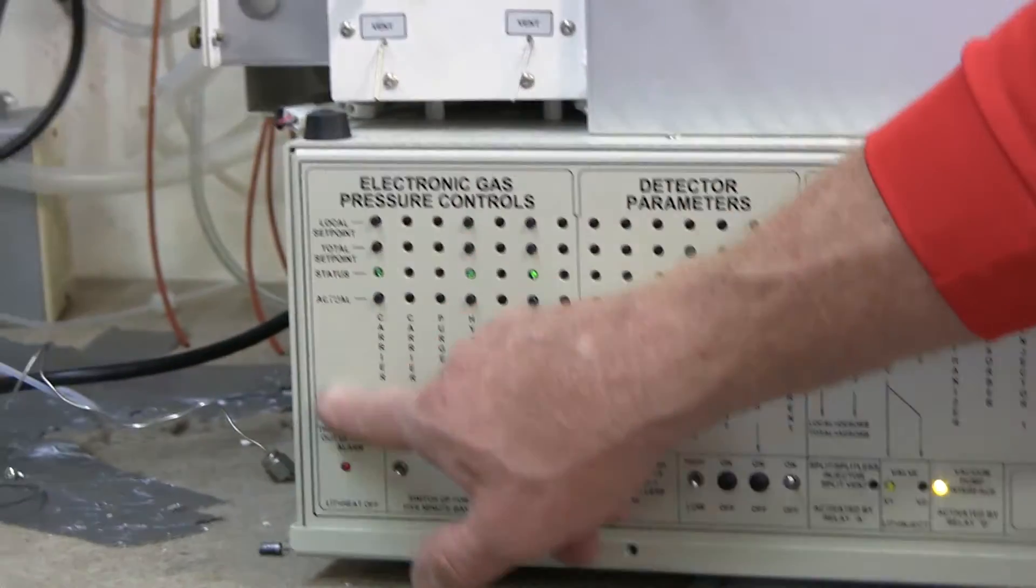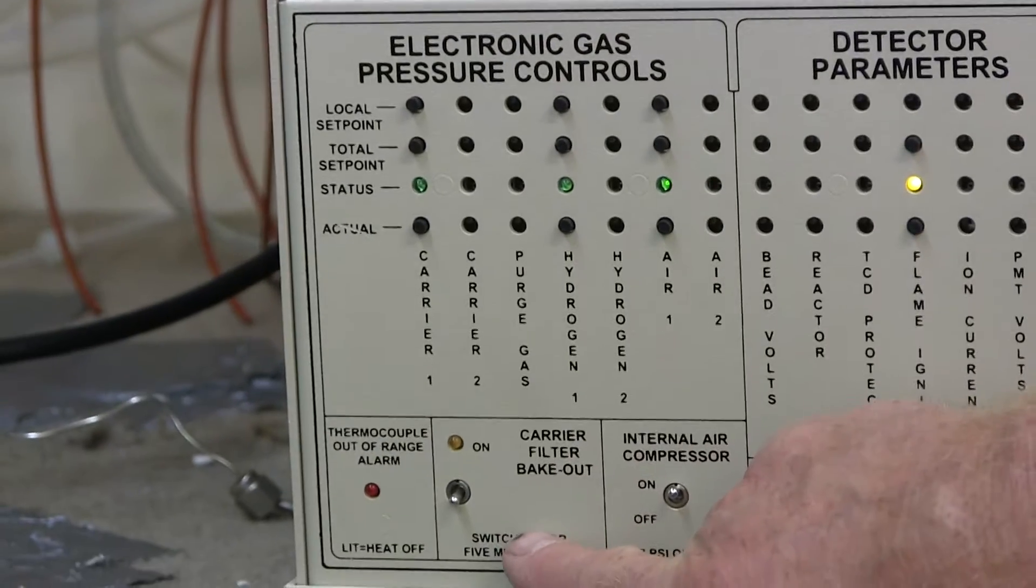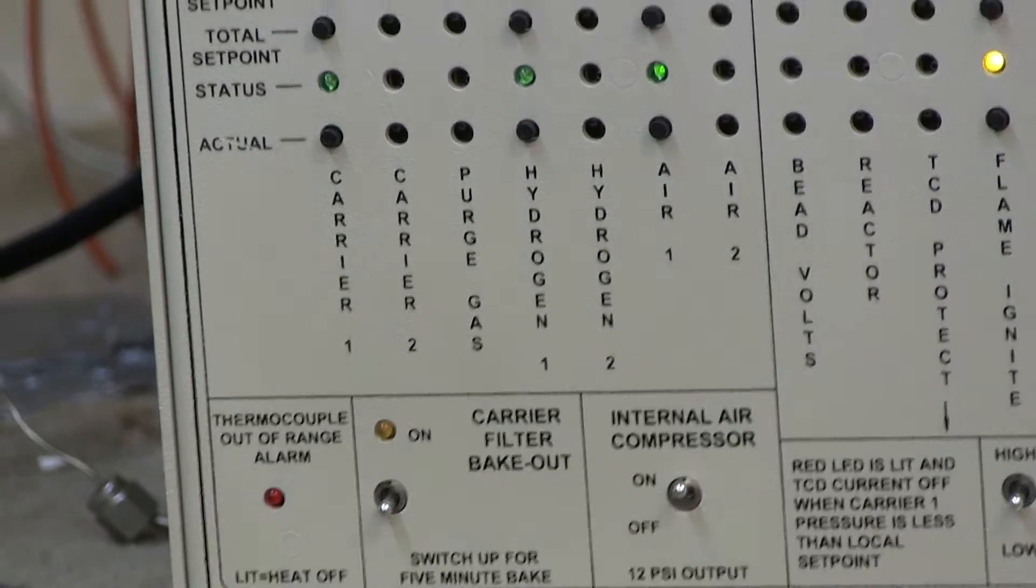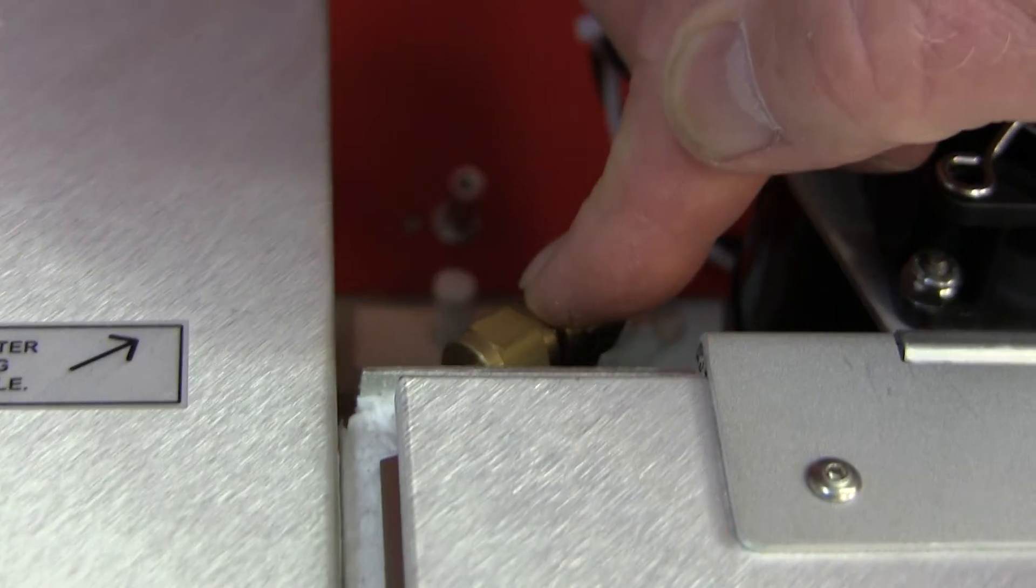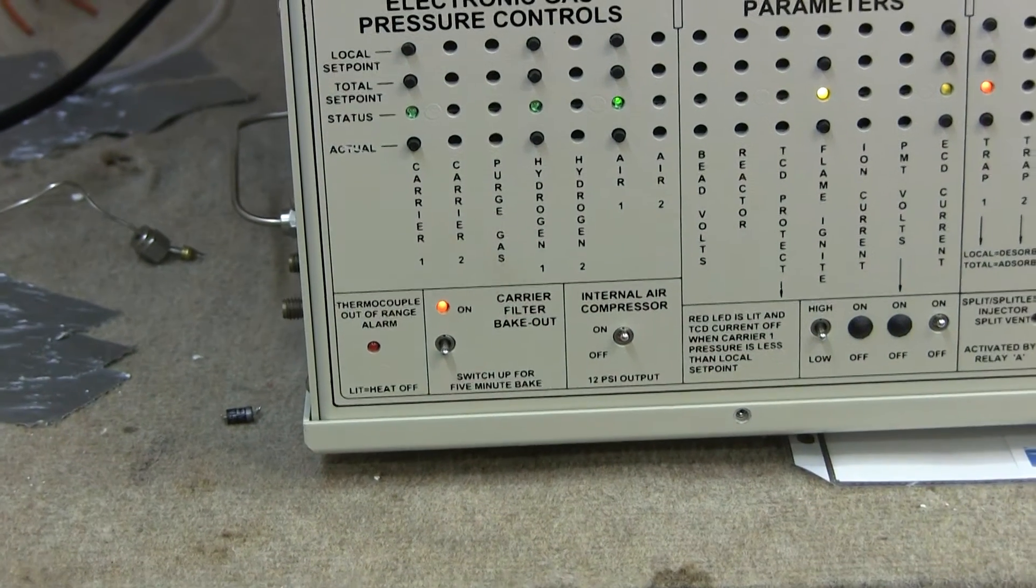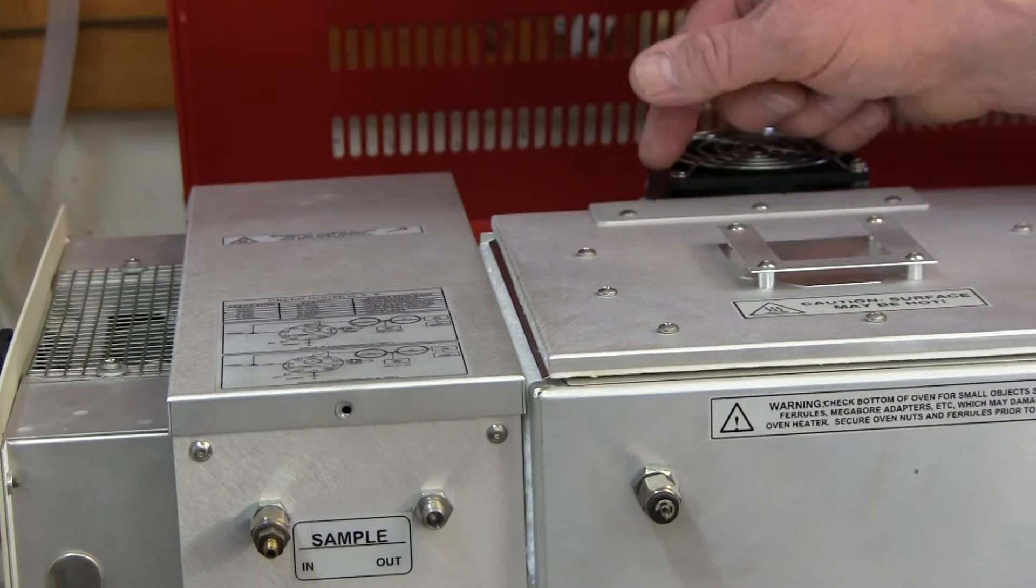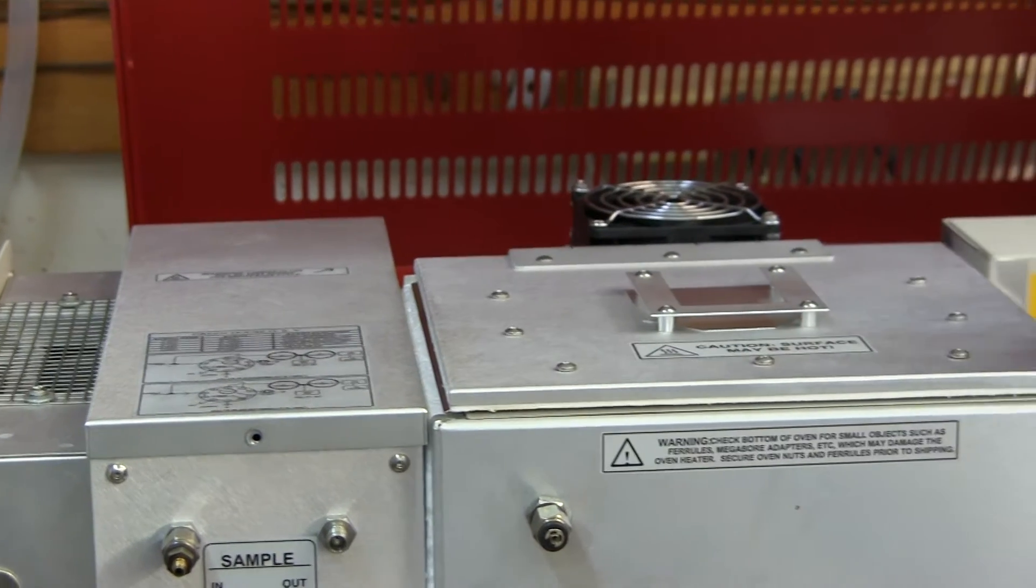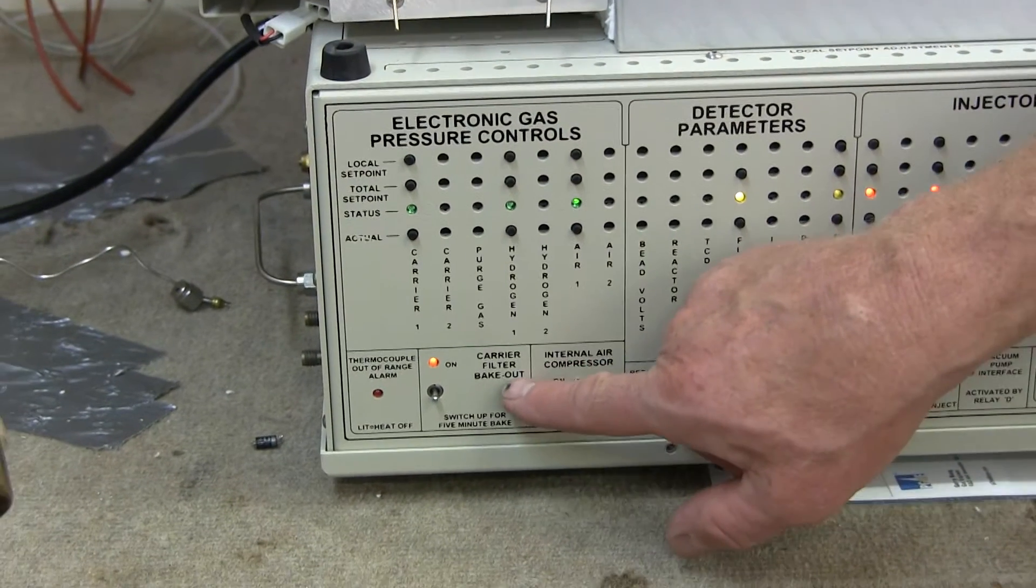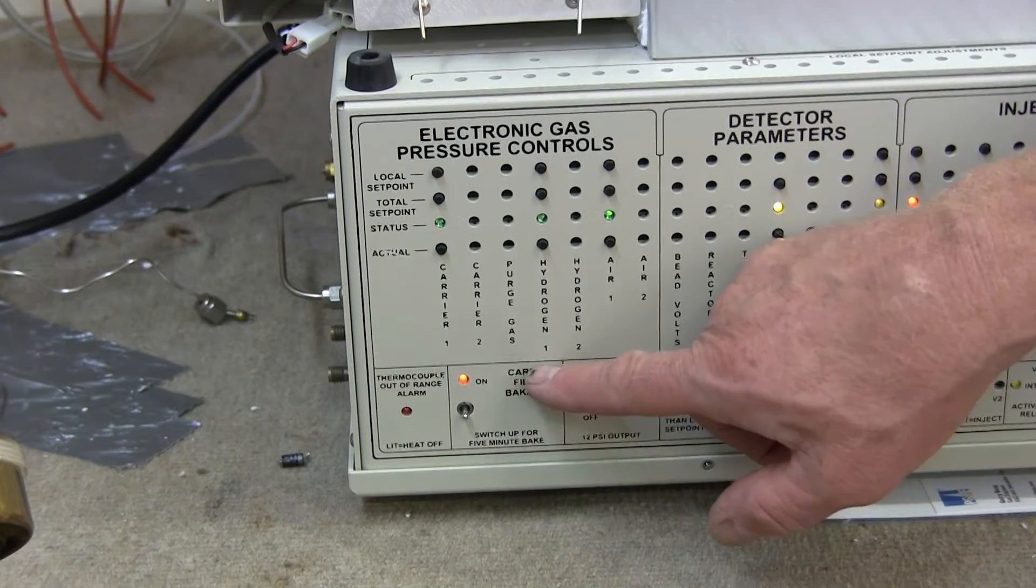Going back to the left hand side of the front of the GC, we see that we have something called a carrier filter bakeout. The carrier filter bakeout is something that we have built into the GC that heats up a little filter. The filter is actually located right here where my finger is. It's a little tiny tube, three inch long tube filled with molecular sieve, encased in a heater jacket. If you want to bake that filter out, you can flip this switch up. When I flip the switch up, it's a spring loaded switch, the light lights and it'll stay lit for five minutes while it heats that filter up. The carrier gas goes through that hot filter and pushes the contaminants out onto the column. You really only need to use it if you think that you have some problem with your carrier gas.